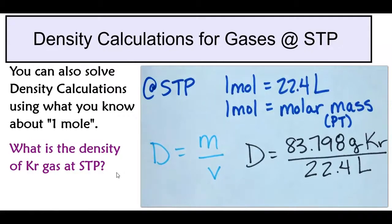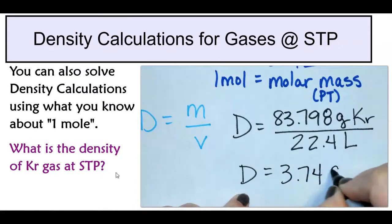Which is equal to 3.74 grams per liter of krypton.